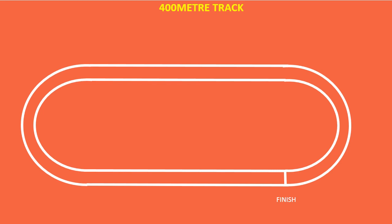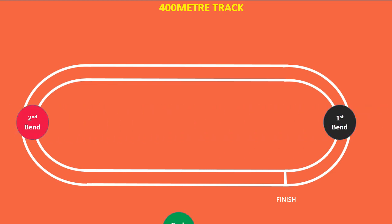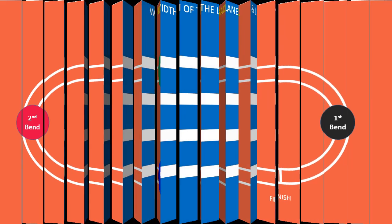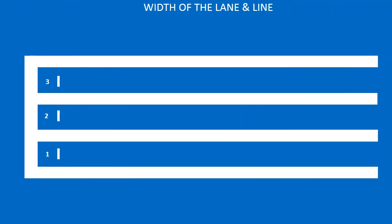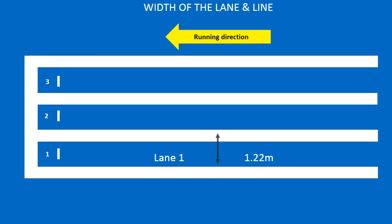The standard 400 meter oval track has two strides and two bends. This is the first bend, this is the second bend, this is the back stride, and this is the home stride. Here we are going to see the width of the lane and width of the line. This is the running direction. The width of the lane is 1.22 meters and the width of the line is 5 centimeters.